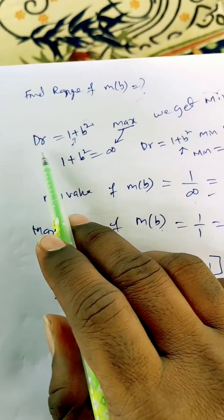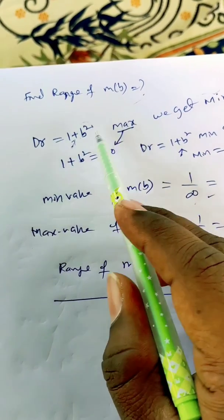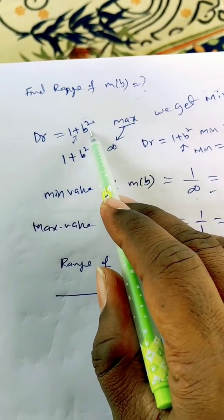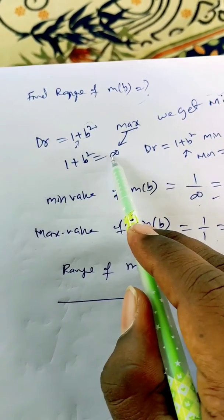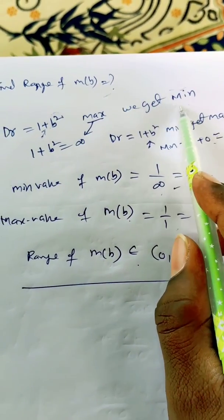Finding range of m(b), the denominator should be maximum, that is 1+b² should be infinity. Because infinity you are substituting here, maximum will be infinity. Infinity squared is infinity, infinity plus 1 is infinity. So that time you get minima.